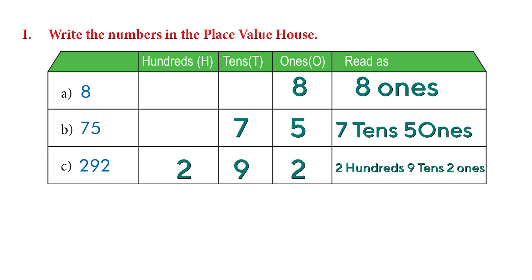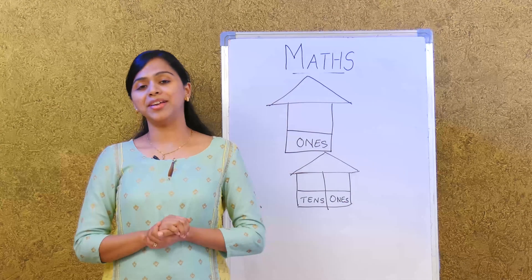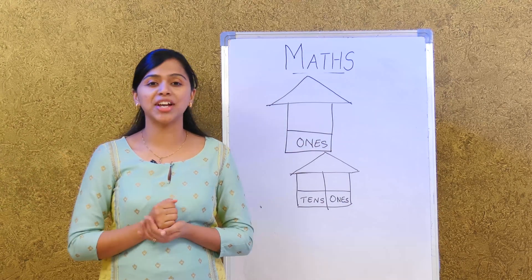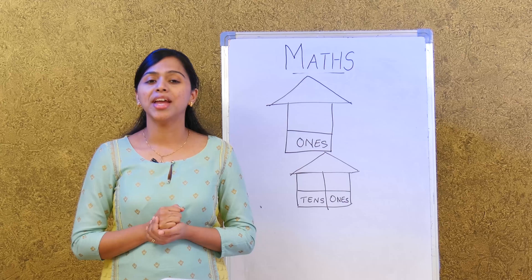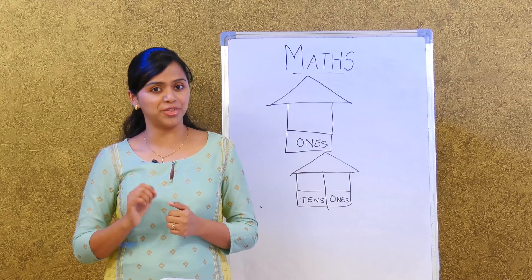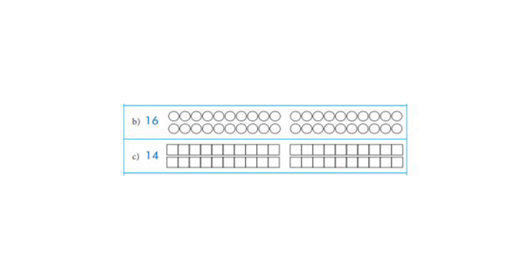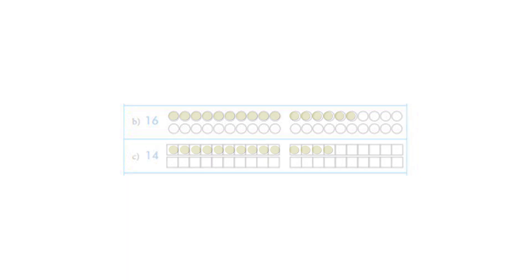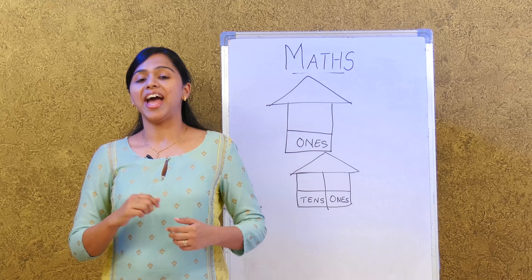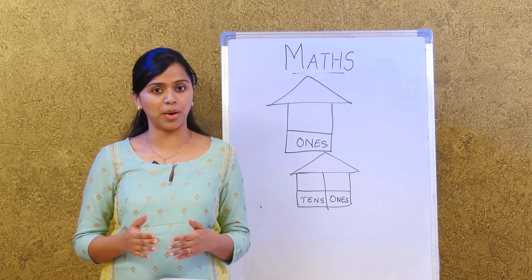Now try out the other numbers on that page by yourself. For the next activity, you need to color and then tell us how the number is read. The number 16 has one ten and six ones. The number 14 has one ten and four ones. You can do the rest on your own.